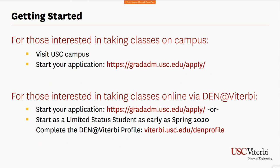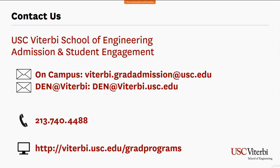To get started: if interested in the on-campus program, visit USC's campus and meet with one of our representatives and start your application. For online students, we are happy to speak with you over the phone or via email. You can start your application as early as the fall for the fall 2020 term. If interested in starting as a limited status student, you can get a jump start in taking courses as early as spring 2020, which starts in January — complete your DEN@Viterbi profile to begin.